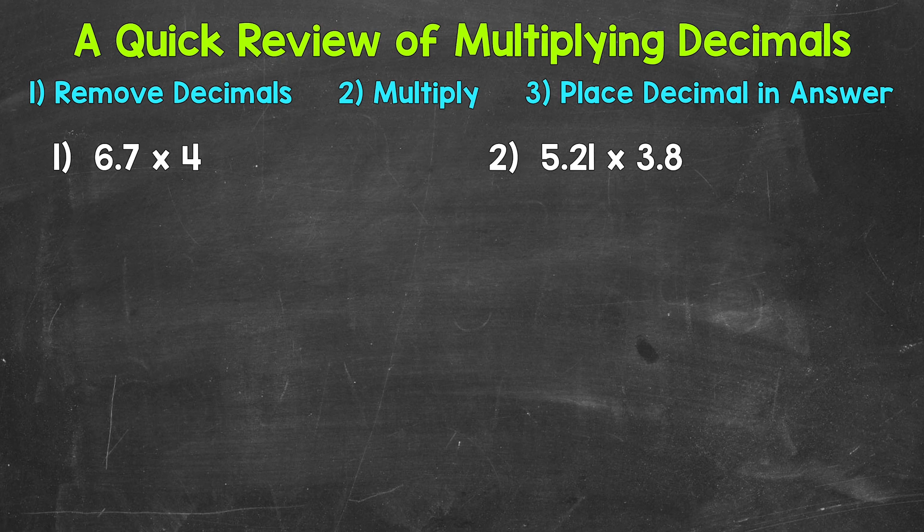Now the first thing that we're going to do when we have a multiplication problem that involves decimals, we're going to remove any decimals within the problem. So we're going to multiply just like we would if we had whole numbers. Let's set this up and rewrite number 1 as 67 times 4. So again, remove any decimals.